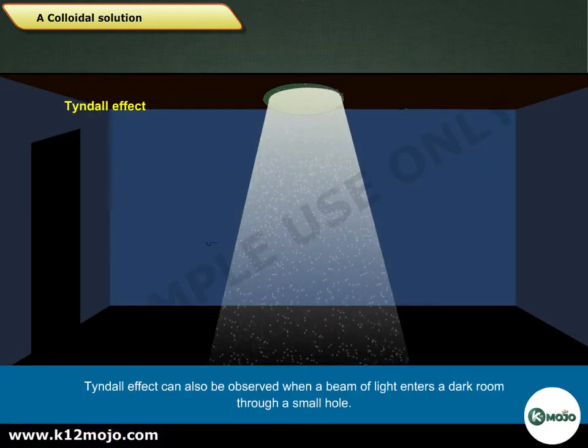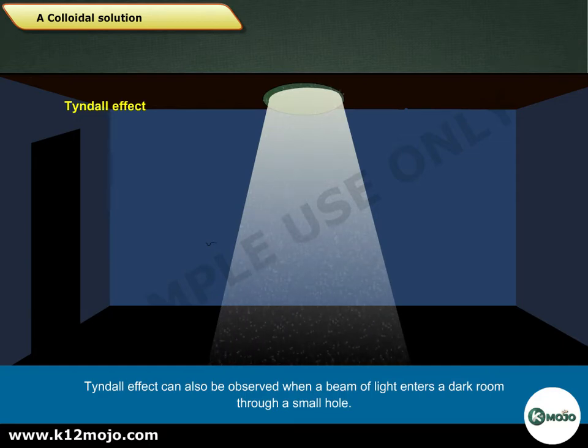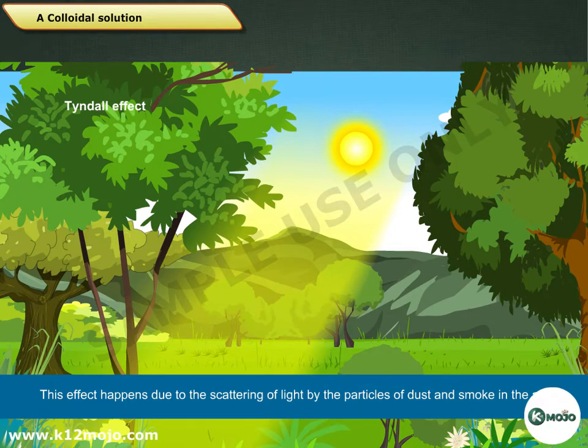Tyndall effect can also be observed when a beam of light enters a dark room through a small hole. This effect happens due to the scattering of light by the particles of dust and smoke in the air.